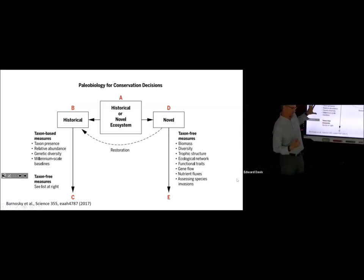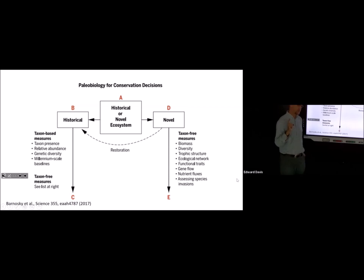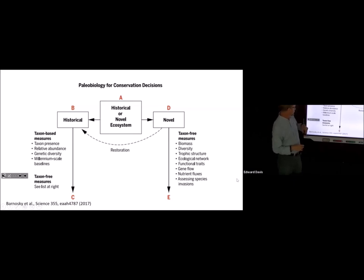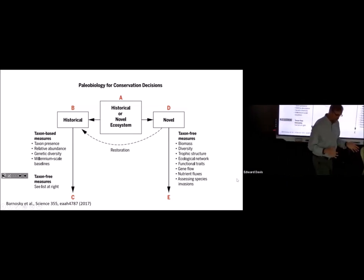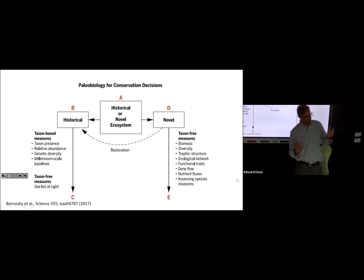If you have a historical system, you can measure its function and similarity to a pre-human intervention ecosystem using taxon-based measures — thinking about what species are actually in the ecosystem, looking at relative abundance, which is often under-examined but really important because the same species can be present while their relative abundance has changed dramatically, causing the ecosystem to no longer function properly. You can also think about genetic diversity and millennium-scale baseline — looking back into the fossil record to understand relative abundance and species presence over the last 1,000 to 2,000 years.